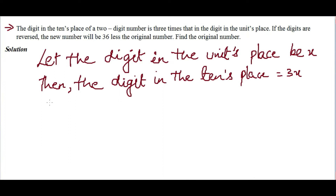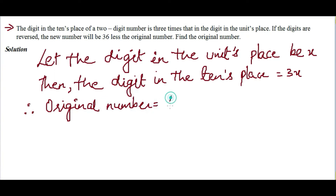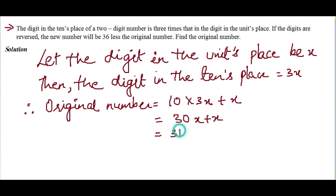The original number will be 10 times the tens digit plus the units digit. Since 3x is in the tenth place and x is in the units place, we multiply 3x by 10, giving 30x, plus x equals 31x. So the original number is 31x.